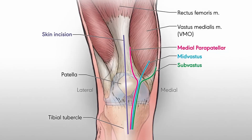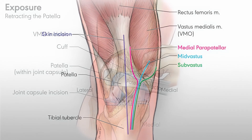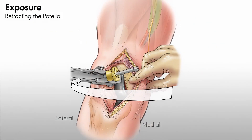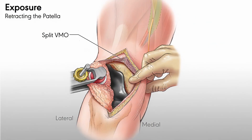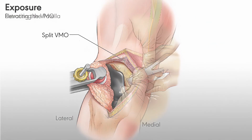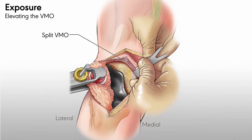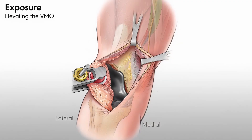The catheter can be inserted during the standard approach for TKA. The catheter is placed after the implant is positioned while the cement is curing, thus not adding time to the operative procedure.